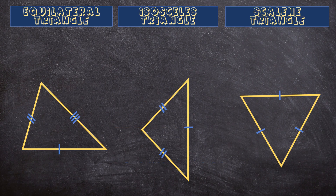Now let's classify these three triangles according to their sides, but only using symbols. For the first triangle on the left, this triangle has three different side lengths — all of the sides have a different amount of stripes. One side has one stripe, another side two stripes, and the third side has three stripes. So all of the sides have a different length, meaning this is a scalene triangle.